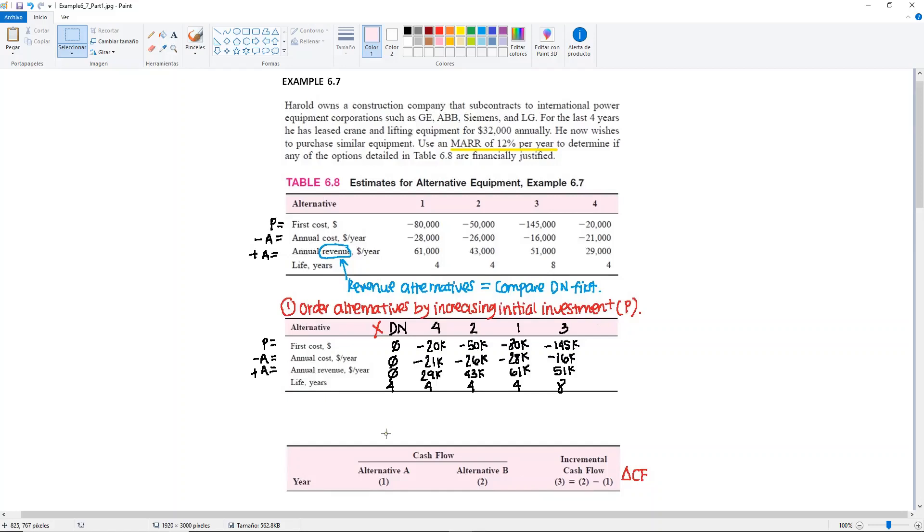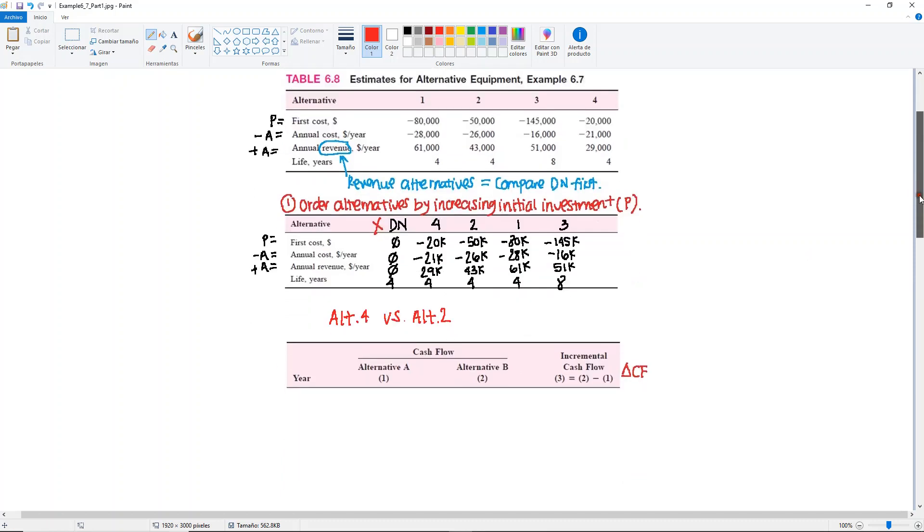For the rate of return analysis, think about it as your favorite sports playoffs. In the previous iteration, we eliminated do nothing, so now the survivor, alternative 4, will be compared against alternative 2. We will follow exactly the same procedure, so we need to fill out our incremental cash flow table for these two alternatives.